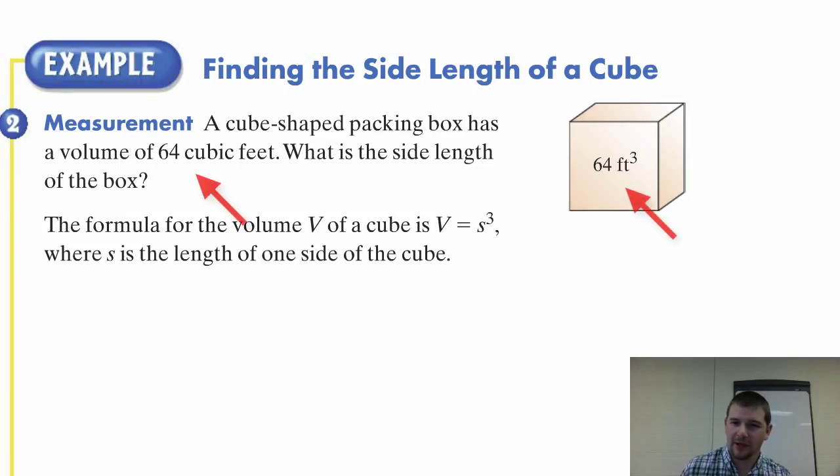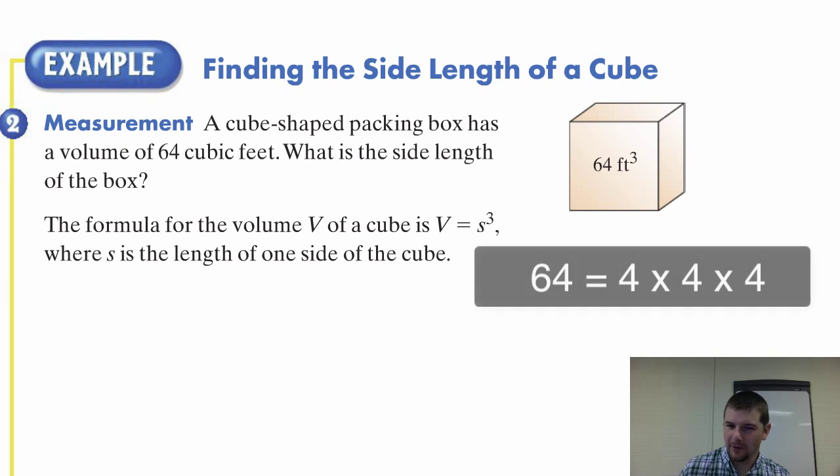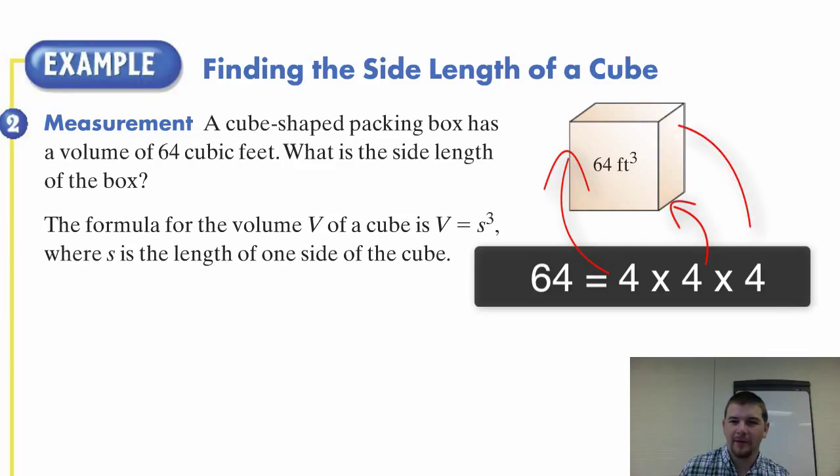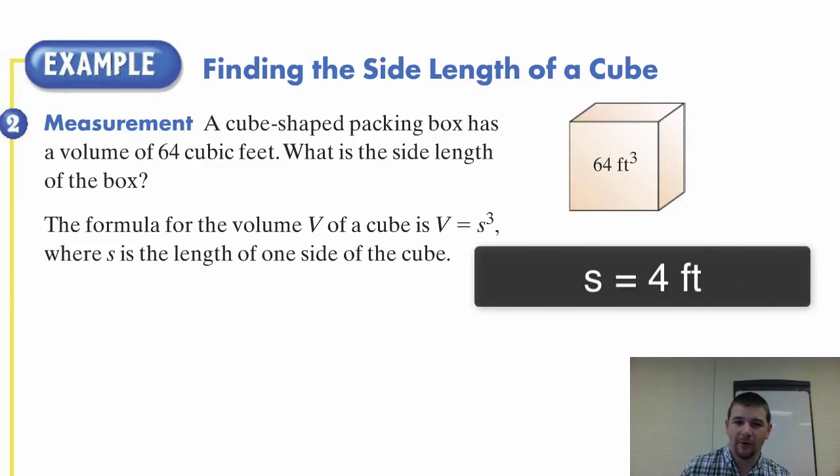Our volume is sixty-four cubic feet, and we determine that the cube root of sixty-four is four. Well, then our length, width, and height will all be four feet. Don't forget the units. That's very important. We're not talking about four miles or four inches. This is four feet. We need to be specific and careful about that.